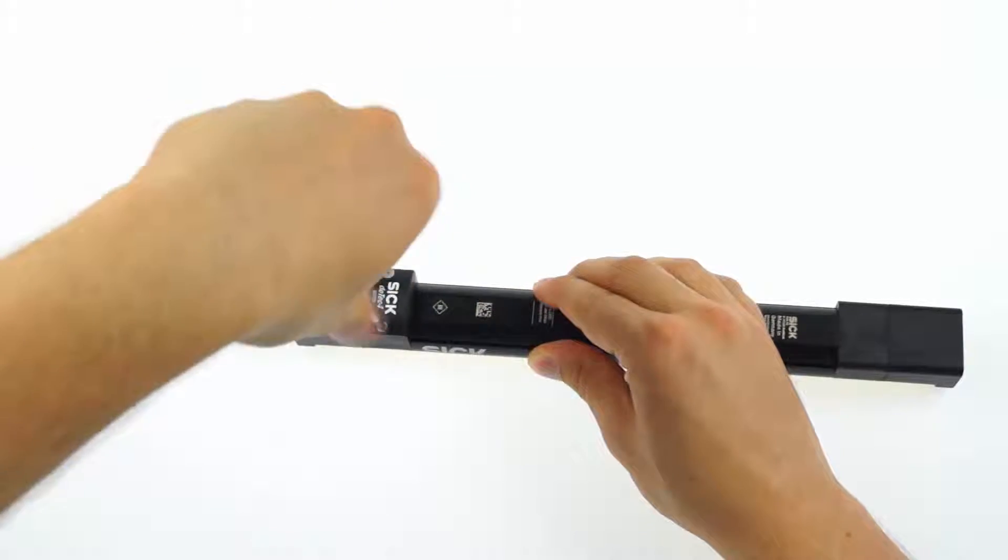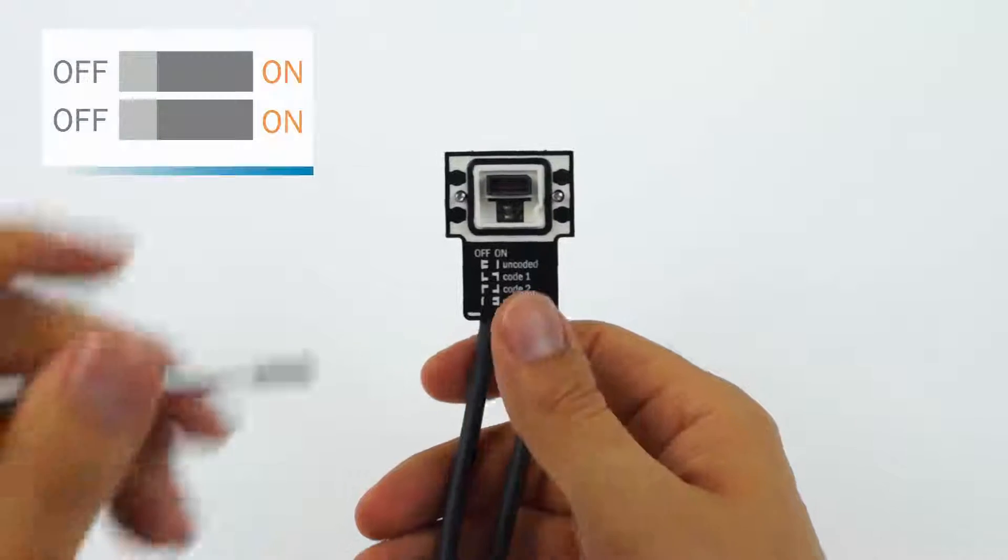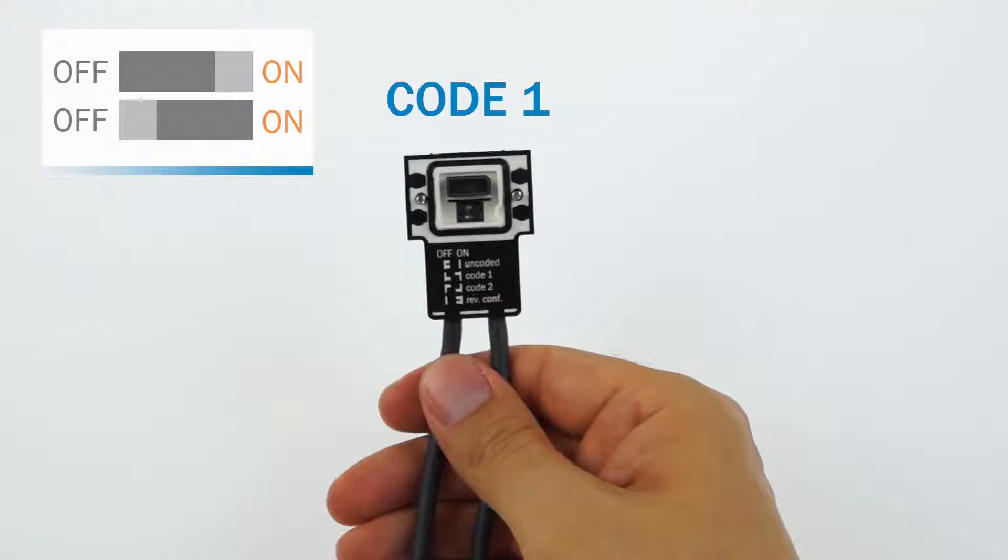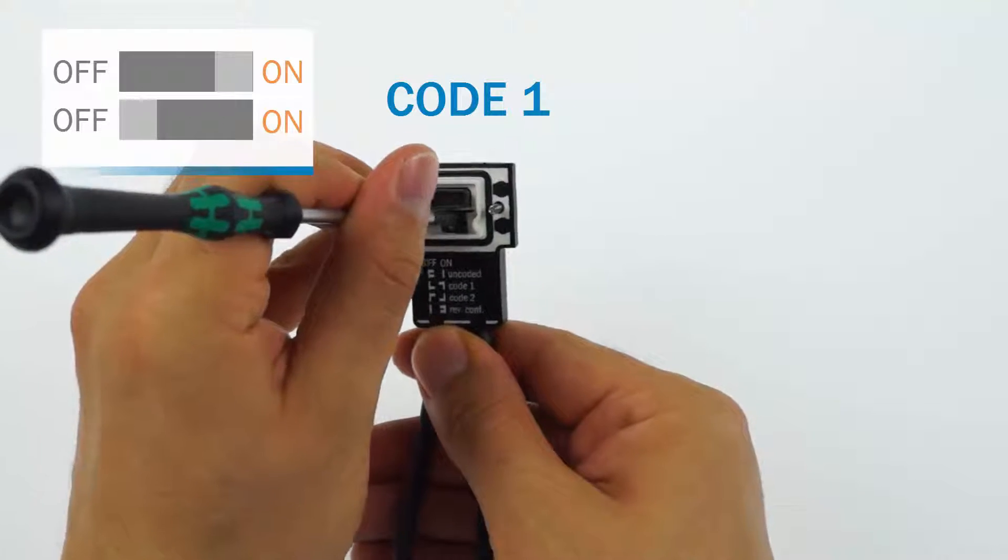Then detach the system plug by loosening the two retaining screws. On the system plug you find two DIP switches. With those switches you can set two different codes by either setting the first switch to ON and the second switch to OFF or vice versa.